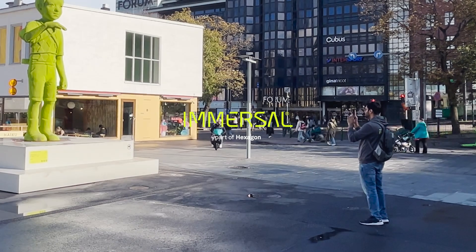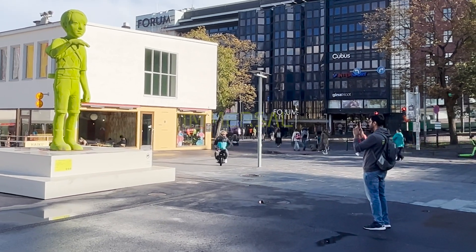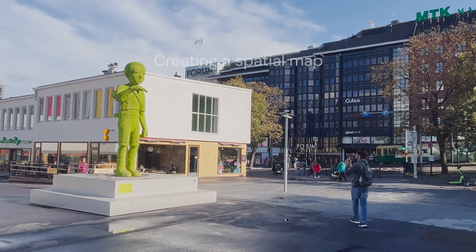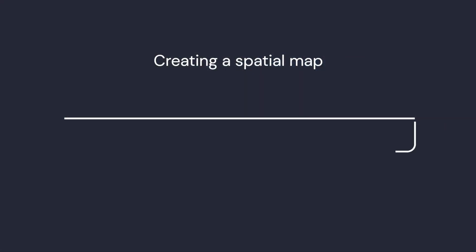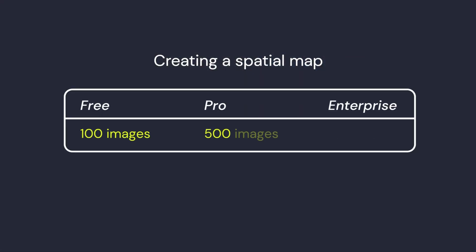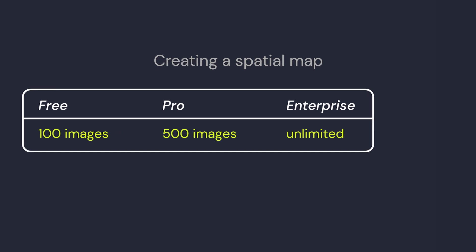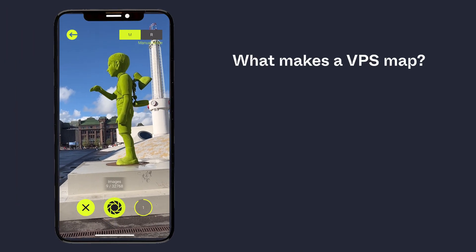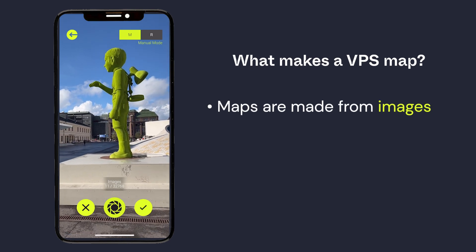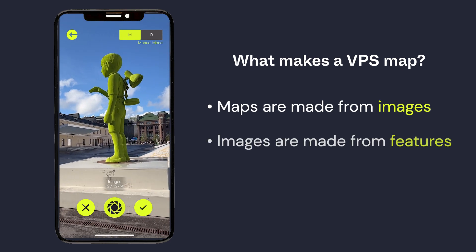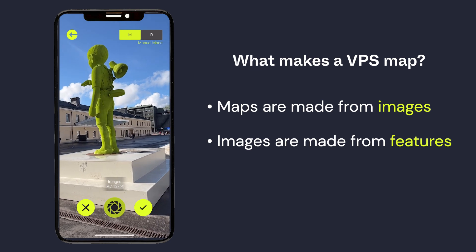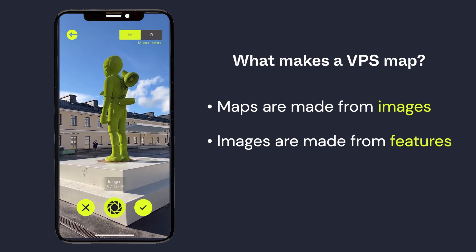With Immersal's free plan, developers can easily explore our visual positioning system and start creating maps using up to 100 images. VPS maps are created using images made of unique features, and capturing those features clearly is key to building a successful map.